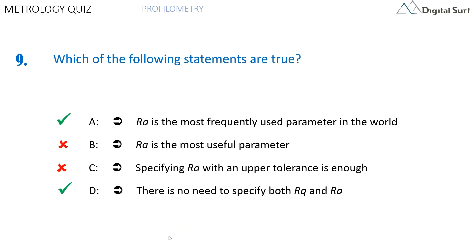The correct answers are A and D. All studies show that RA is the most frequent parameter mentioned on drawings — it is also the first parameter used in history, once called CLA (Center Line Average). But it does not mean it is the most useful or the most efficient. In most cases, it barely correlates with the surface function unless very specific filtration conditions are applied. When specifying RA or another roughness parameter, it is important to document the filtration condition, cutoff, and filter type if not Gaussian — otherwise the tolerance is meaningless. The two parameters RA and RQ are totally correlated to each other; you can use one or the other, but there is no need to use both. RQ has the advantage of having a physical meaning and should be preferred over RA.